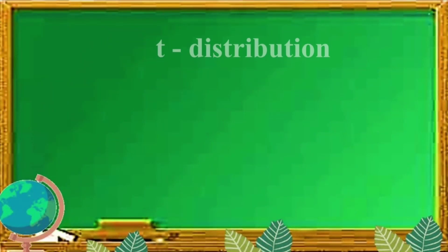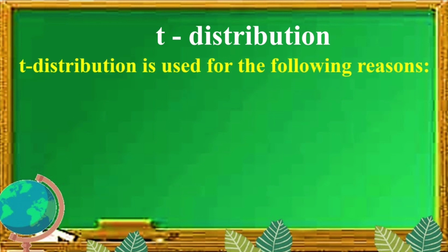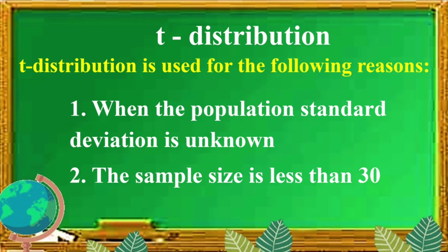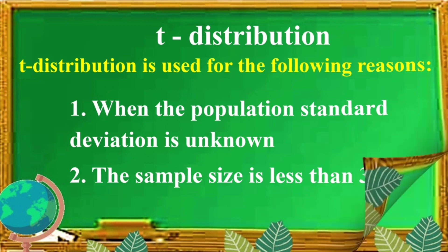Okay, so let's recall the uses of the T distribution. T distribution is used for the following reasons. First, when the population standard deviation is unknown. Second, the sample size is less than 30.